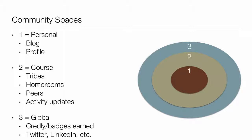We wanted an environment that would be community-centered and encourage students to go through their own sense-making processes and engage each other in those. There are three main community spaces. The first is the personal space — where students have a blog and a profile, it's more about them but the community can still see who they are and engage with their blog posts. The second is the course space, where more community features come in — including the tribes, or groups, and homerooms, where you see all other peers and activity updates. Then there's the third space, the global community, which came together organically: students carried conversations onto Twitter and created their own groups on Goodreads and Facebook.